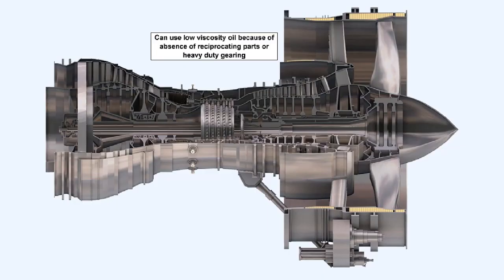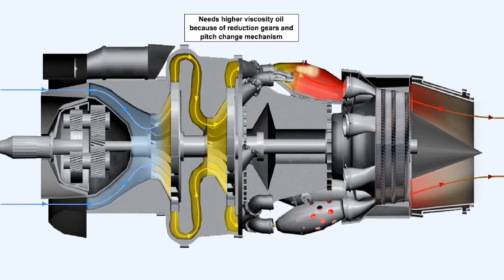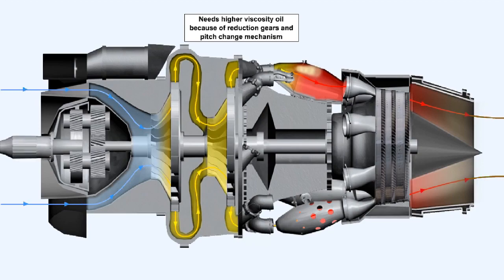Low viscosity oils can be used in gas turbine engines because of the absence of reciprocating parts and heavy duty gearing. However, turboprop engines which have reduction gears and propeller pitch change mechanisms require a slightly higher viscosity oil.